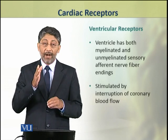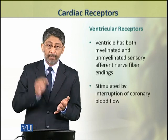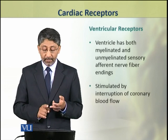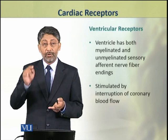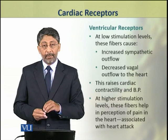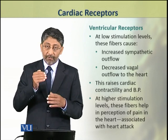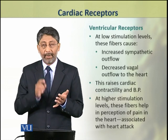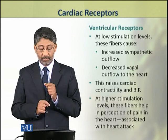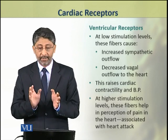The ventricle has both myelinated and unmyelinated sensory afferent nerve fiber endings, which are stimulated when blood flow to the coronary arteries is interrupted. When the interruption level is low, the stimulation level is low and the effect produced is increased sympathetic outflow and decreased vagal outflow to the heart, resulting in increased cardiac contractility, increased cardiac output, and increased blood pressure.